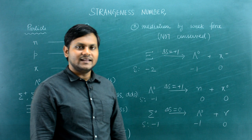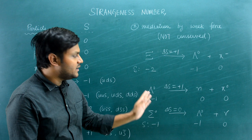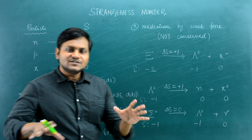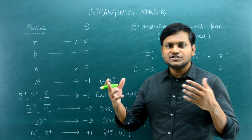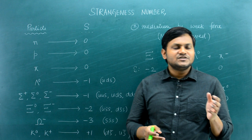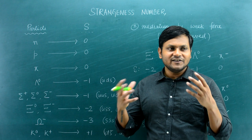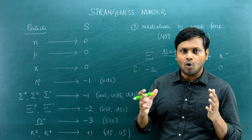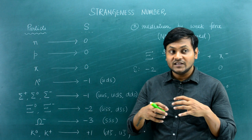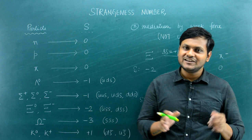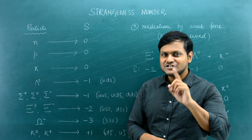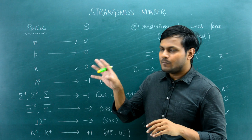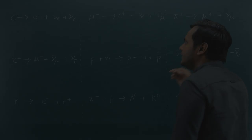So the lepton number, baryon number, and strangeness number are a set of rules based on studies over the last 50 years that give us an idea of how different subatomic particles interact. Out of all the chaos and diversity of particle interactions, these numbers give us confidence about what interactions are happening, what is allowed, and what is not allowed. Now let's do a little test — I'll give you a few interactions and you can determine whether they are possible or not.